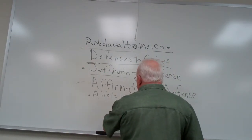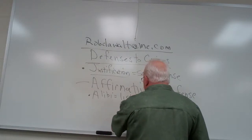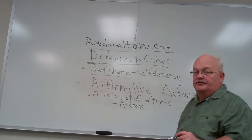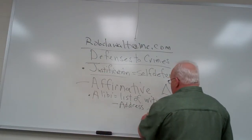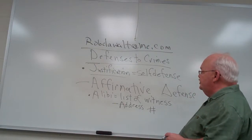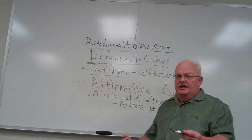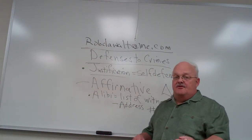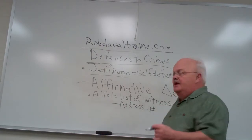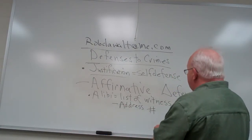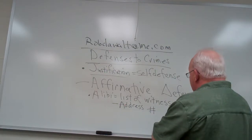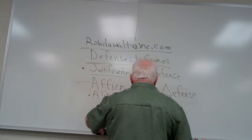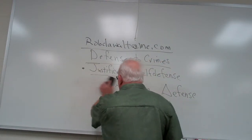Another thing that comes up: what about addresses? It would be smart to include an address, maybe even a phone number. Different courts have different rules on this, but if they have a rule that says you've got to provide the name, address, and phone number, then you'd better get that ready and turned in. I've seen it come up a lot in alibi cases where somebody just flat forgot to turn over the witness list.